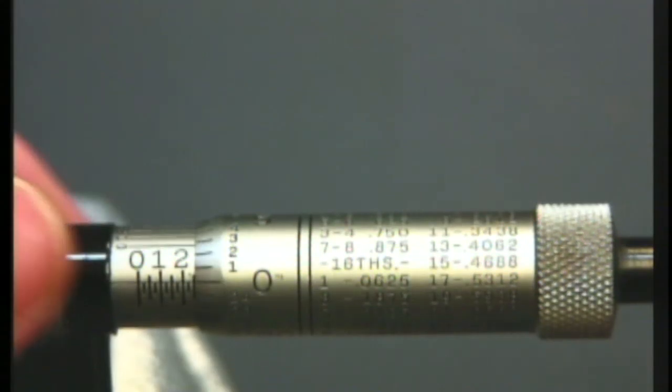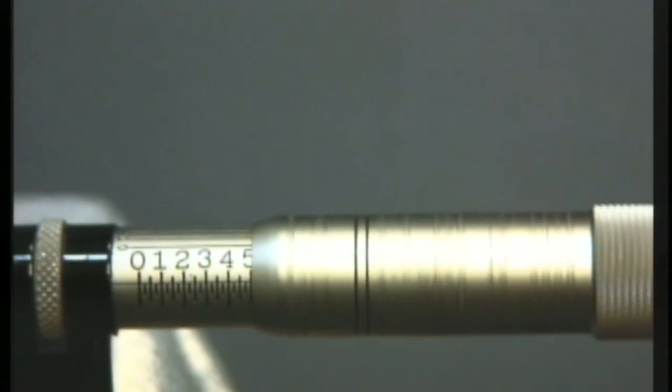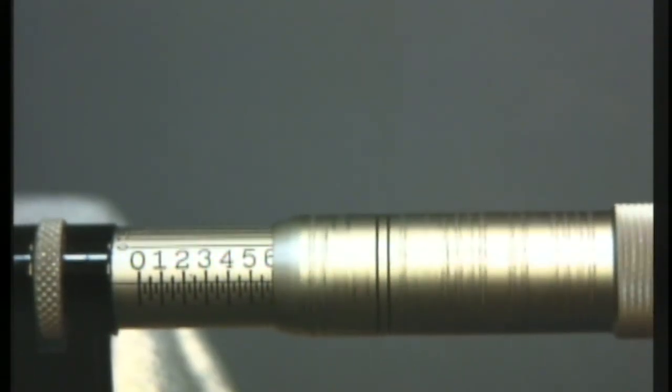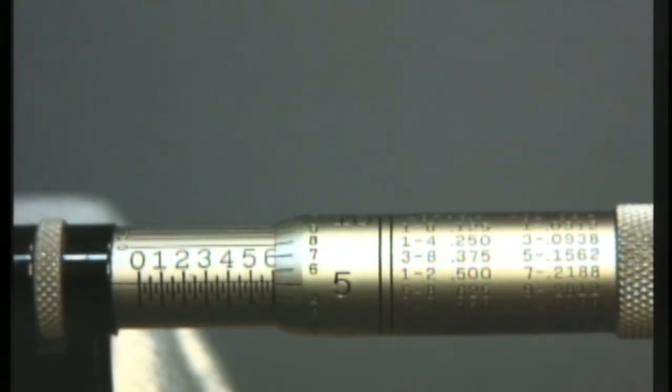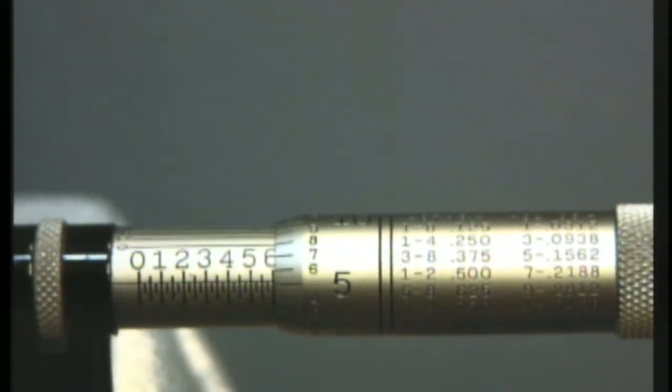So let's take a look at some micrometer readings. I'm going to turn our thimble out a ways. So notice we have some large numbers here. I'm going to point my finger for a moment. We have zero, one, two, three, four, five, and so on.